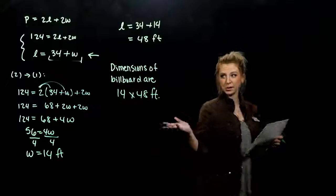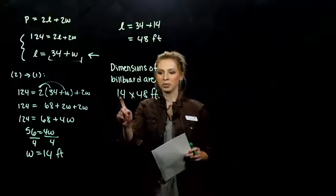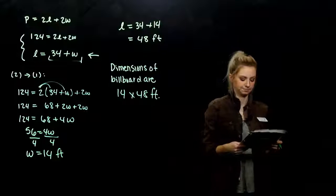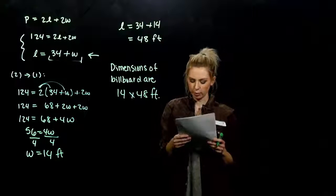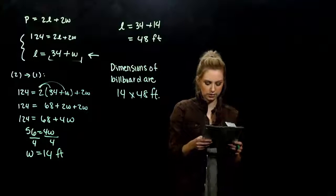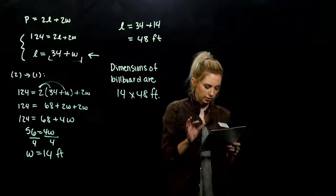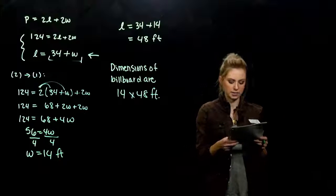And if you don't think you did it right, or you weren't quite sure, add them all up. If I add width, width, length, and length together, I should get 124. So go ahead and take that last example for yourself. The perimeter of a soccer field is 280 yards. The width is 5 more than half of the length. Find the dimensions.